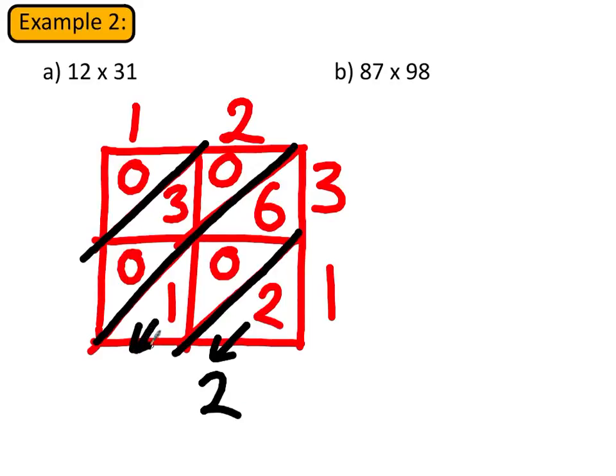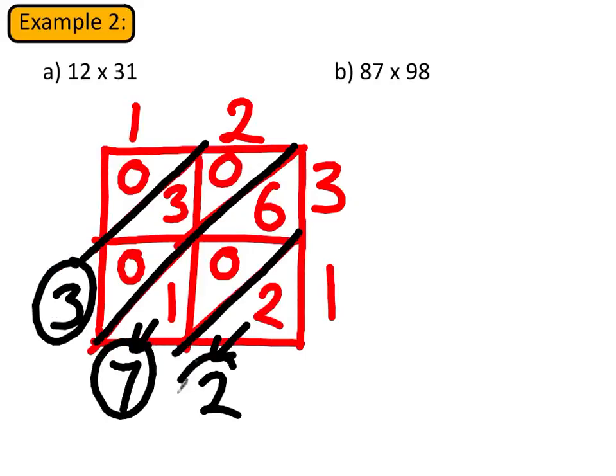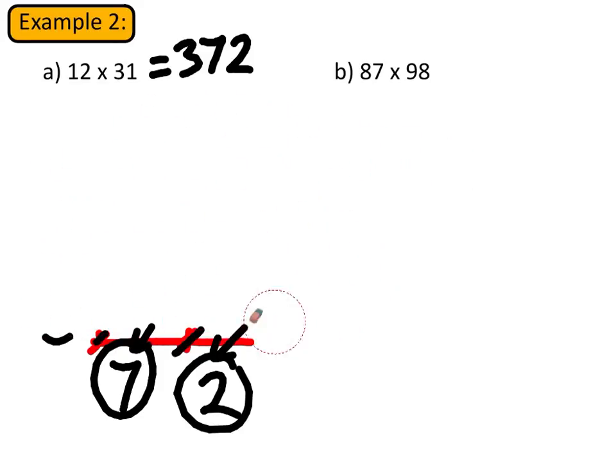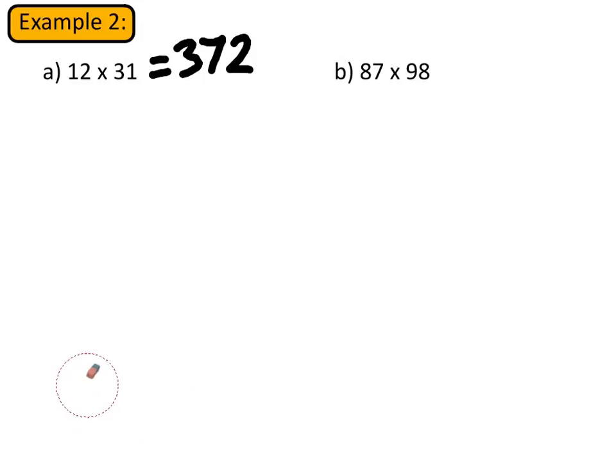These diagonal lines are important. These are the columns which we're going to add with. So the first one, if we add that, we're going to get a 2. If we add this column together we're going to have 7. If we add this column together we're going to have a 3. And the last column doesn't have anything in it so it's 0 there. And 12 times 31 is 372.